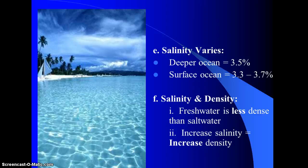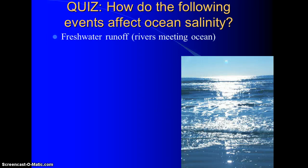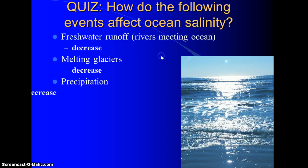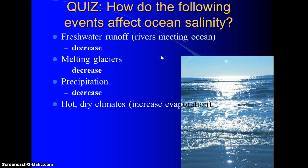With an increase in salinity comes an increase in density, so water sinks. Here's a quick quiz on how events affect ocean salinity. Fresh water runoff from rivers meeting the ocean dilutes the salt — salinity decreases. Melting glaciers release fresh water, also diluting and decreasing salinity. Precipitation is fresh water, so it decreases salinity as well. In hot, dry climates with high evaporation, fresh water evaporates and leaves salts behind, concentrating and increasing salinity.